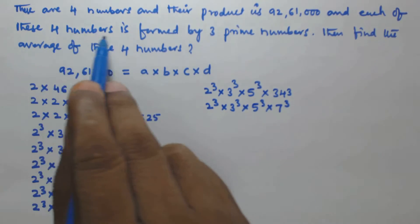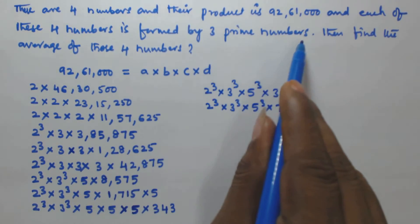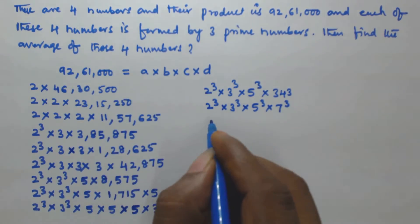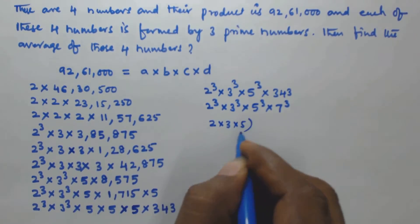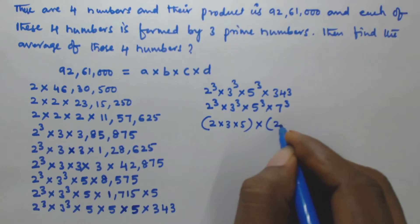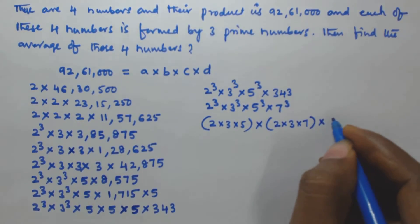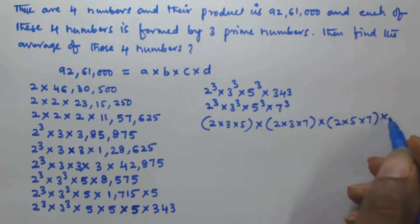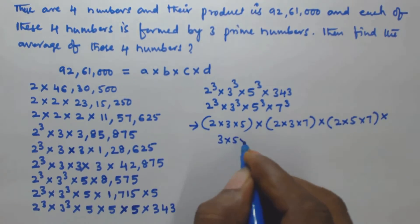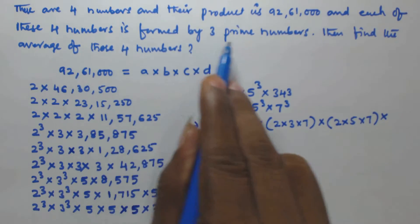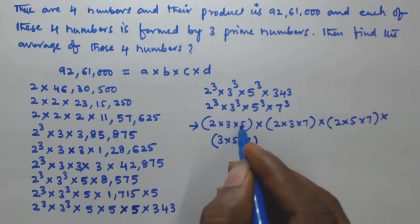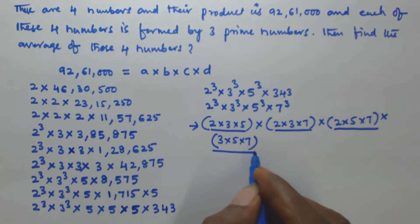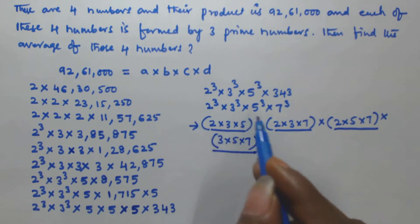Now it is given that each of these four numbers is formed by 3 distinct prime numbers. Using the primes 2, 3, 5, and 7, we can form four numbers each using exactly 3 of these primes: the first is 2 × 3 × 5, the second is 2 × 3 × 7, the third is 2 × 5 × 7, and the fourth is 3 × 5 × 7. These four numbers are each formed by 3 prime numbers.